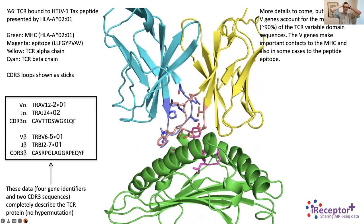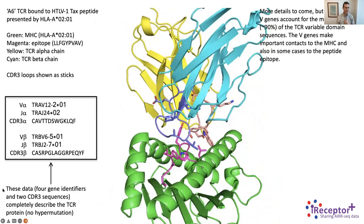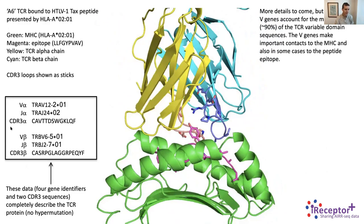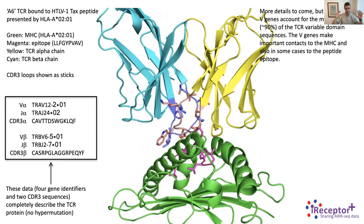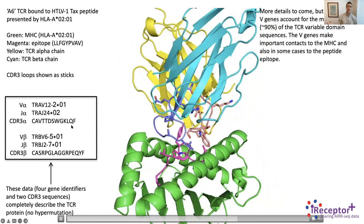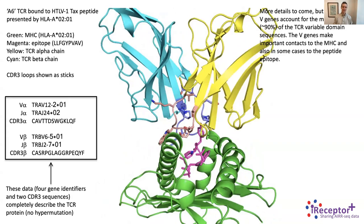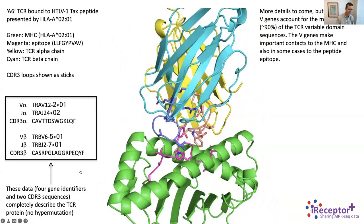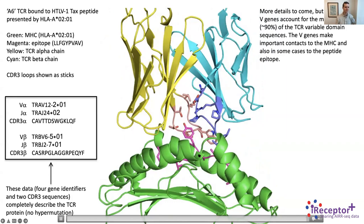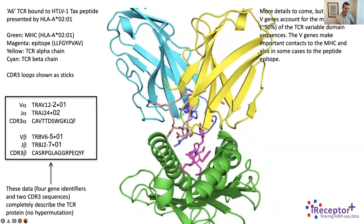The information needed to describe the amino acid sequence of a T cell receptor is essentially: which V gene was chosen, which J gene was chosen, and the amino acid sequence of the CDR3. Since somatic hypermutation typically doesn't happen with T cell receptors, all you need to describe the protein sequence is those four gene identifiers and two CDR3 sequences.